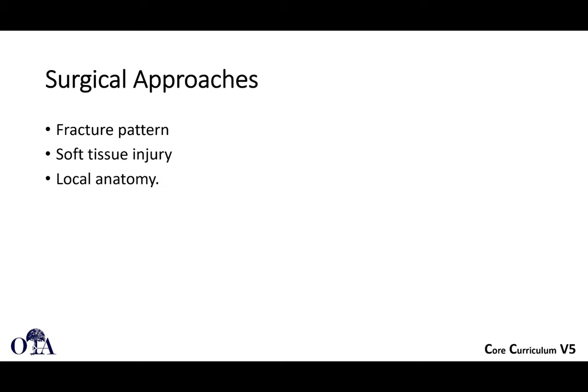Understand your fracture pattern, understand your soft tissue injury, understand the local anatomy — this will help dictate which surgical approach you're going to use. You may look at the x-ray and CT scan and decide on a certain approach, then look at the wounds and soft tissue injury, where maybe there were blisters or partial vascular injury, and realize your surgical approach needs to be different. You can't just rely on the fracture pattern alone.